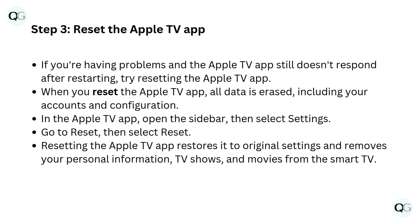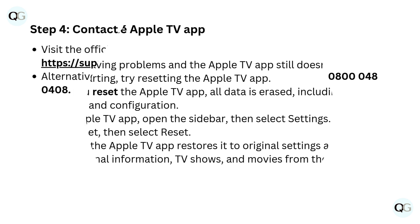In the Apple TV app, open the sidebar, then select Settings. Go to Reset, then select Reset. Resetting the Apple TV app restores it to original settings and removes your personal information, TV shows, and movies from the smart TV.